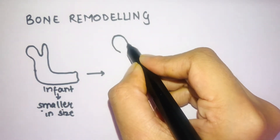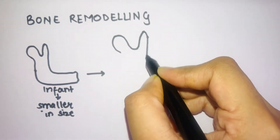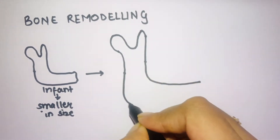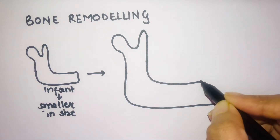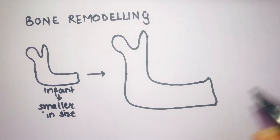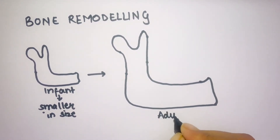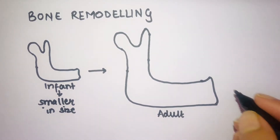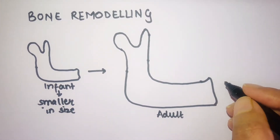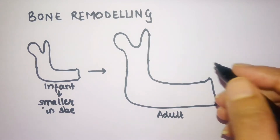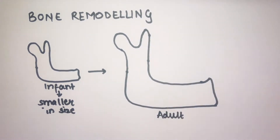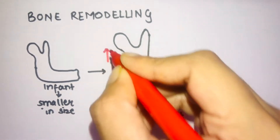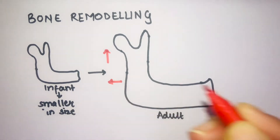Now it grows in size — and what exactly makes it grow, I'm going to talk about that. We have covered the growth of the mandible particularly in embryology. The mandible grows in specific areas with deposition and resorption in specific areas, because of which your mandible grows in an upward and backward direction.